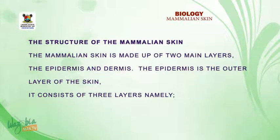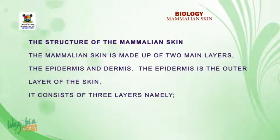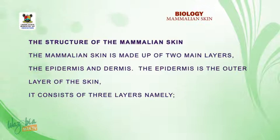Let's take a look at the structure of the mammalian skin. The mammalian skin is made up of two main layers: the epidermis and the dermis. The epidermis is the outer layer of the skin.